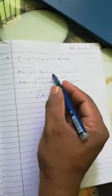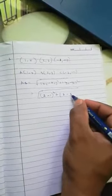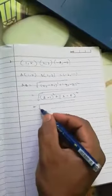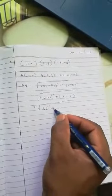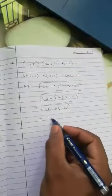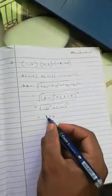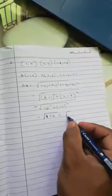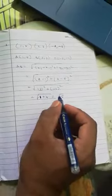So 2 minus 1 is 1 squared, 3 minus 5 is minus 2 squared. So answer is 1 plus 4, so we can put this as root 5.